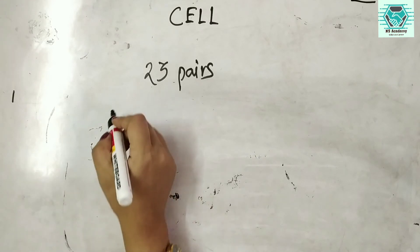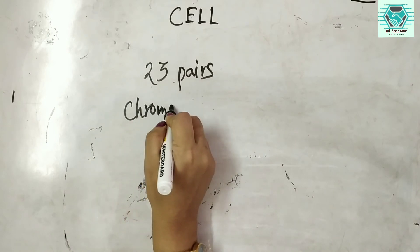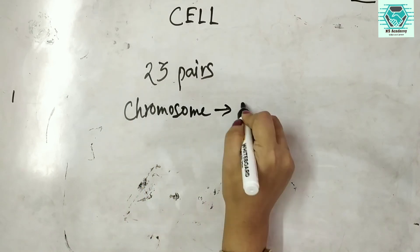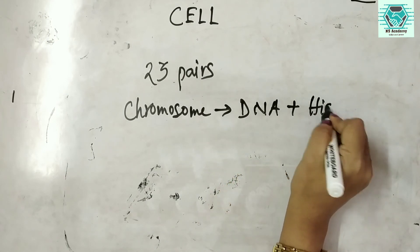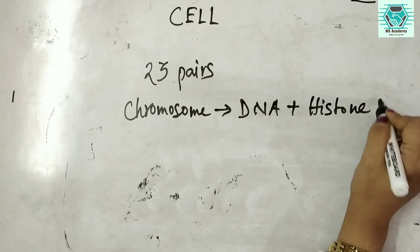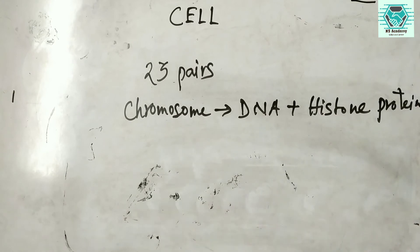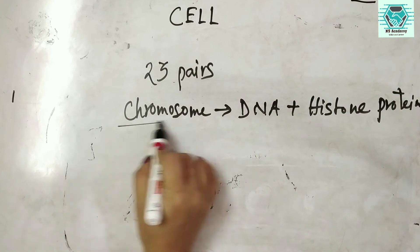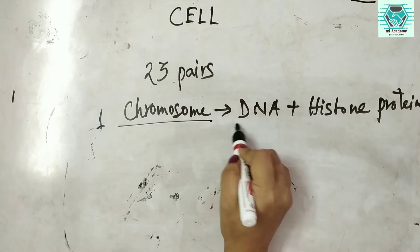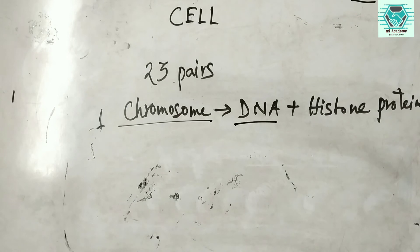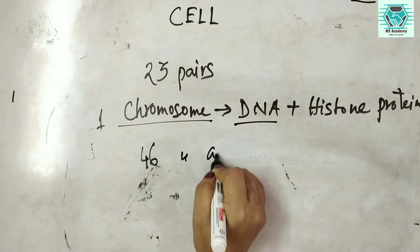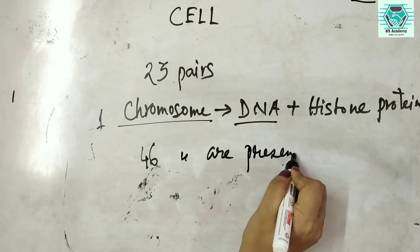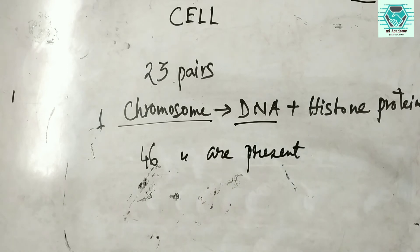Chromosomes are made of DNA and histone protein. A single chromosome contains a single DNA. So one chromosome means one DNA with histone protein. Likewise, the 46 chromosomes together contain 46 DNA molecules.